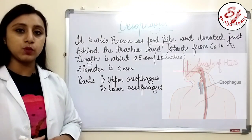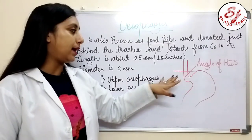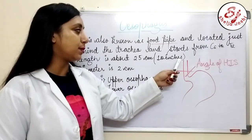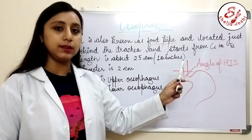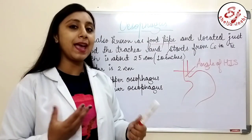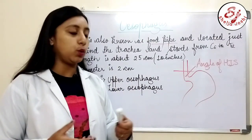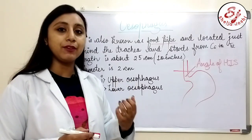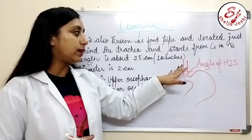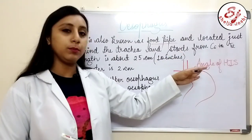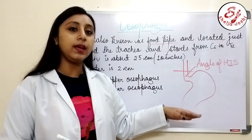There are two parts of the esophagus: the upper esophagus and the lower esophagus. The diagram shows the lower end of the esophagus, the cardiac region, and the fundus region of the stomach. At the 12th thoracic vertebra, the esophagus ends. At the 11th thoracic vertebra, the esophagus crosses the diaphragm, and just below the 11th vertebra, the esophagus forms an angle shape called the angle of His.